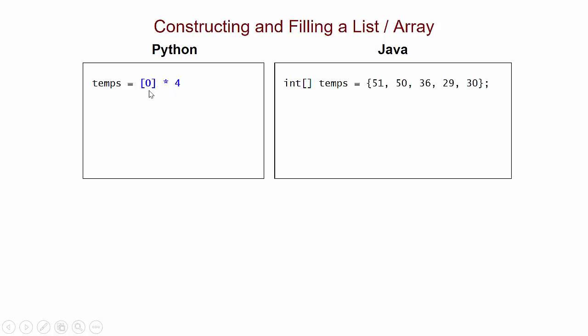one way to do that would be to say, take a list with only one zero, multiply it four times, and that will give us a list of length four that is filled with zeros. The corresponding Java code looks like this.